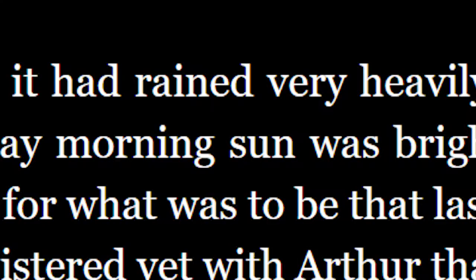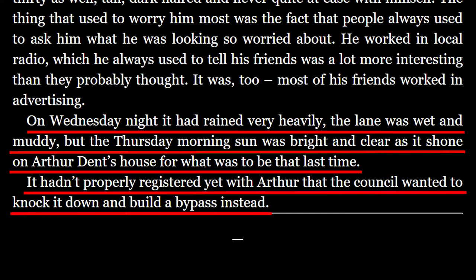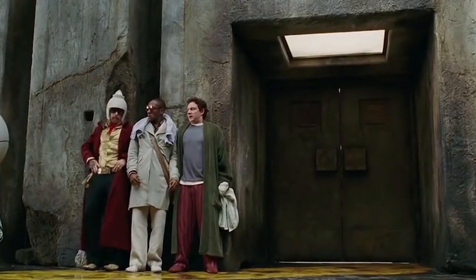Let's move on to the final passage. 'On Wednesday night it had rained very heavily. The lane was wet and muddy, but the Thursday morning sun was bright and clear as it shone on Arthur Dent's house for what was to be the last time. It hadn't properly registered yet with Arthur that the council wanted to knock it down and build a bypass instead.' This concludes our first page. There's very little focus on the experience of Arthur Dent, and it does little to throw the reader into Arthur's shoes. Rather, it looks on, almost laughing at Arthur as he stumbles through events, which is indicative of the rest of the novel.